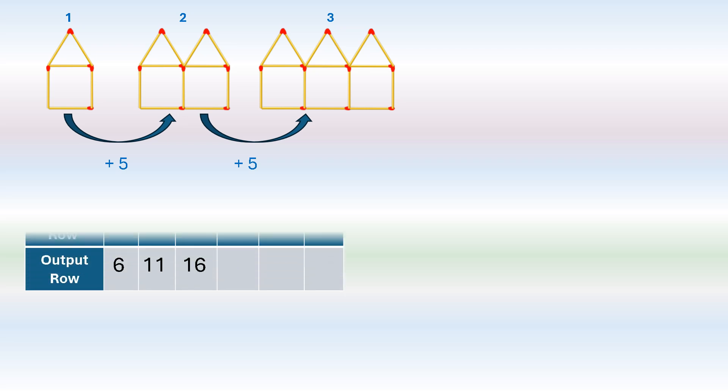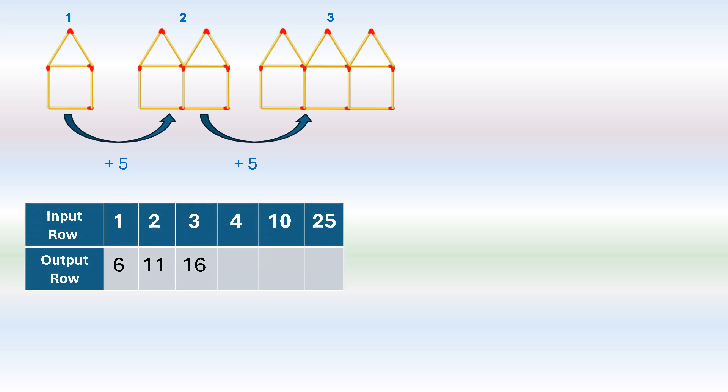Now let's put this in a table. The input row has the first, second, third, and fourth terms. We're also looking for the 10th and the 25th numbers. The output row shows six matchsticks in the first term, 11 in the second, and 16 in the third. Instead of actually drawing the diagrams and counting, we can use a formula to solve for the 4th, 10th, and 25th numbers.